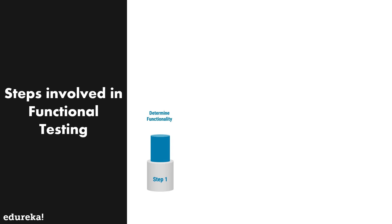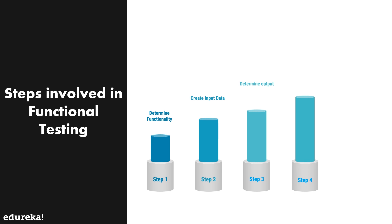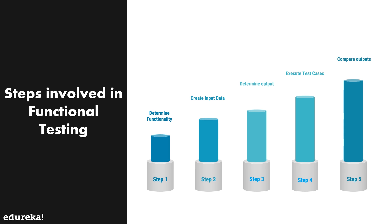Now let's have a look at the different steps involved in functional testing. The first step is to determine the functionality of the product that needs to be tested, including testing the main functionalities, error conditions and messages, and usability testing — whether the product is user-friendly or not. The next step is to create the input data for the functionality to be tested as per the requirement specification. Then the output is determined for the functionality under test. In step 4, the prepared test cases are executed, and finally the actual output is compared with the expected output to find whether the functionality is working as expected.